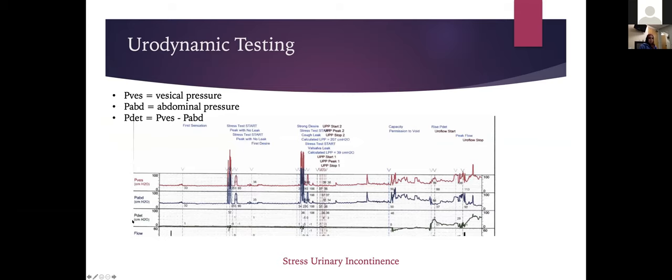When reading a urodynamic tracing, the three main pressures are Pves (vesical pressure within the bladder), Pabd (abdominal pressure), and Pdet (detrusor pressure), which is a calculated value: Pdet = Pves minus Pabd. Since the bladder sits within the abdominal cavity, Pves always includes abdominal pressure — so we subtract Pabd to isolate true detrusor pressure.